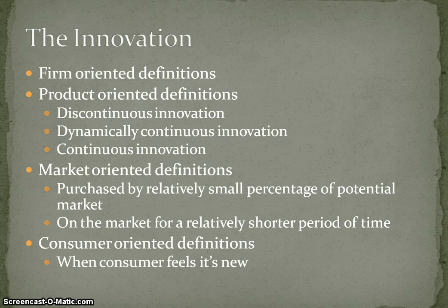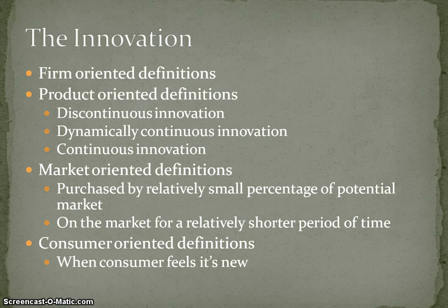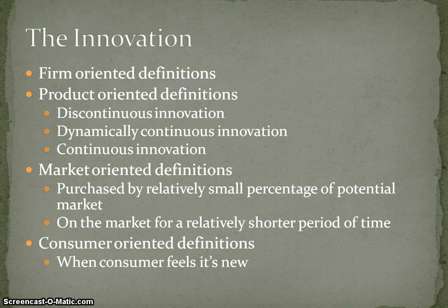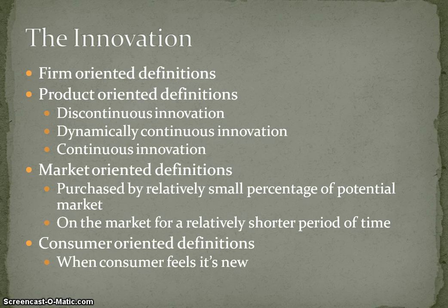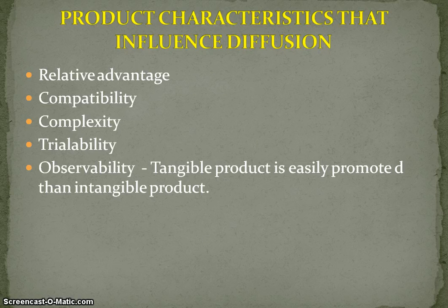Once you have innovations, they have to be conveyed to the customer — you need to convince the customer. People do not normally end up buying a new product immediately, and very few people will buy a new product at the first instance. In order to reduce their perceived risk and ambiguity in buying, we need to build confidence among them. We need to improve the knowledge of customers about the product, persuade them, reduce their dissonance, and make them feel good about the product. Product characteristics play a major role in influencing diffusion.